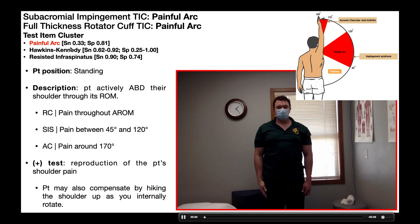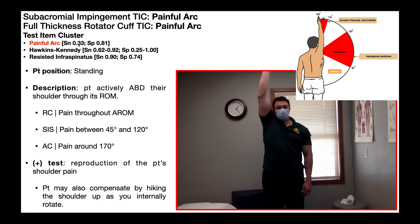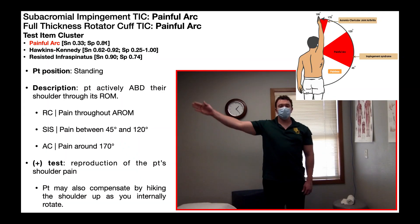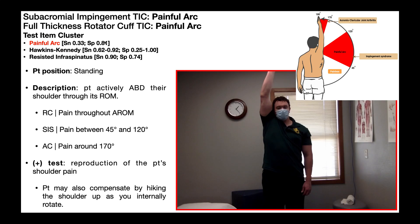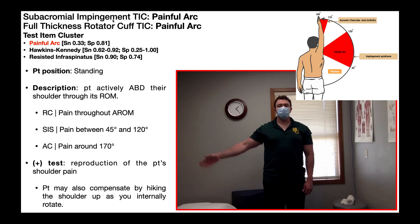If we look at the psychometrics, the sensitivity is very low — only 0.33 — so it's very bad at ruling out a condition when the test is negative. But the specificity is moderately good at 0.81, meaning that if a patient has a positive painful arc test, there's an 81% chance that they have one of these two conditions.